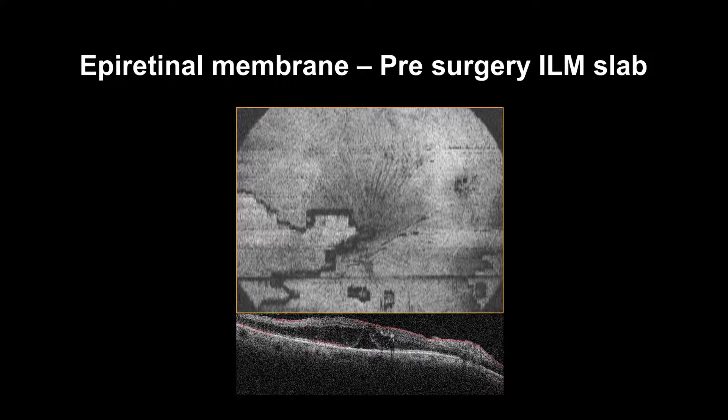The ILM slab serves an essential role in identifying the location and area of adhesions for safer grasping, and determining the size and shape of the epiretinal membrane, which is essential when planning pars plana vitrectomy. Deeper detraction — more than 90 microns — correlates with better best-corrected visual acuity and more benefit from surgery, especially for cases without intraretinal cystic changes.